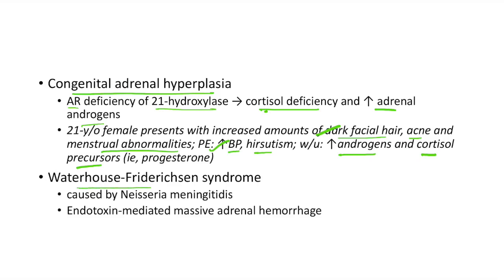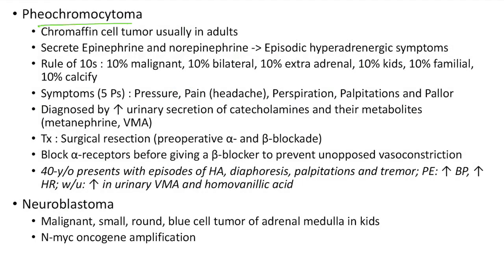Waterhouse-Friderichsen syndrome is caused by Neisseria meningitidis, with endotoxin-mediated massive adrenal hemorrhage. Pheochromocytoma is a chromaffin cell tumor which usually occurs in adults. It secretes epinephrine and norepinephrine leading to episodic hyperadrenergic symptoms. It follows the rule of tens: 10% are malignant, 10% are bilateral, 10% are extra-adrenal, 10% occur in kids, 10% are familial, and 10% of pheochromocytomas are calcified.